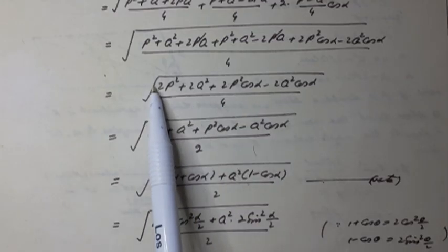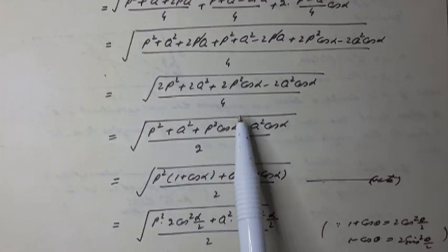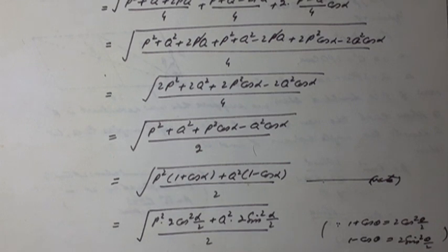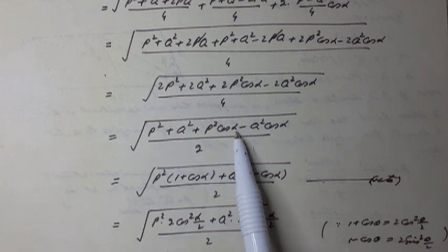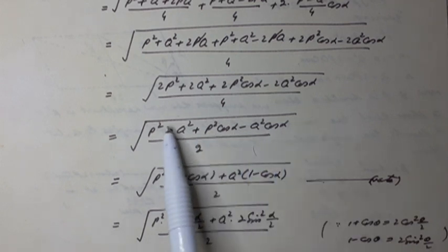After taking two common and this two will cancel with 4 and we get square root of p squared plus q squared plus p squared cos alpha minus q squared cos alpha.